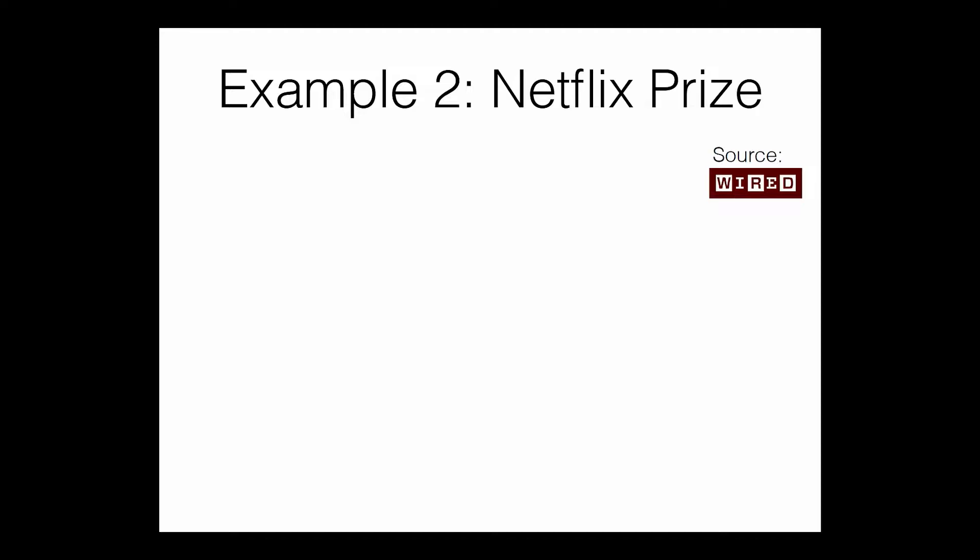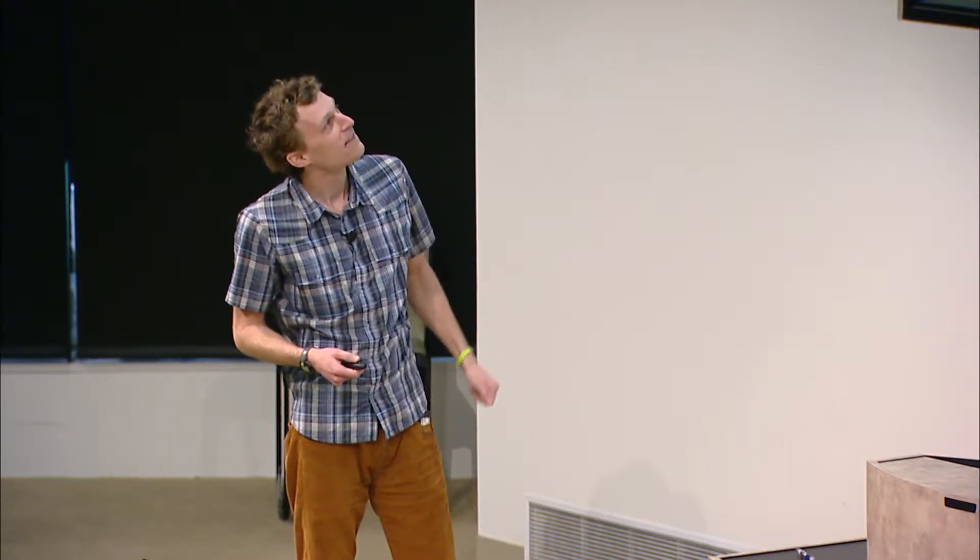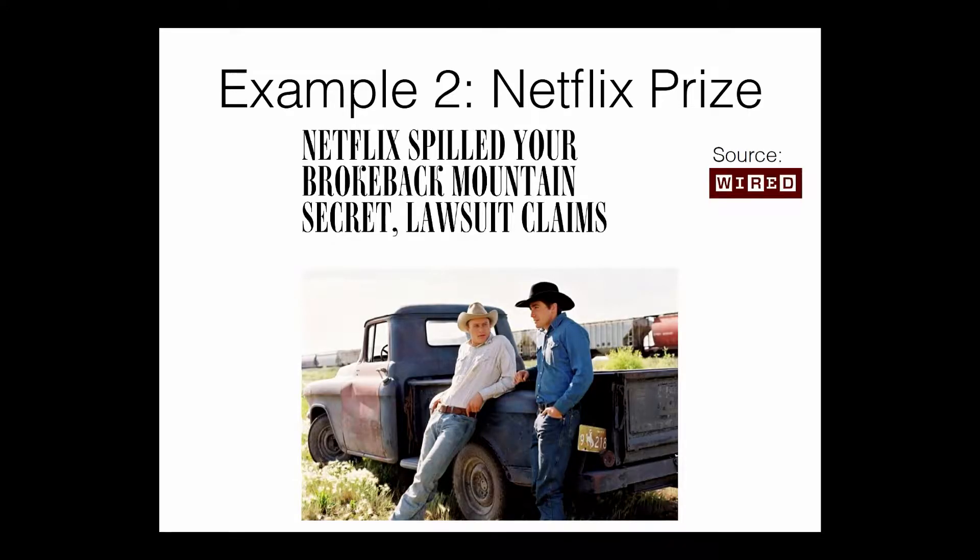Here's another example. So the Netflix prize. The Netflix prize was this big competition that Netflix, the movie company, ran. They said, we'll give you a million dollars if you can improve our video recommendation system. It was the cheapest engineering they ever did because they got hundreds of people to do this. So then they ran the competition. People made it a little better. Then they said, we're going to run another one. We're going to release a little bit of extra data. And then this woman claimed that because Netflix released that she had watched Brokeback Mountain, she was outed to her family as a lesbian and she sued them.